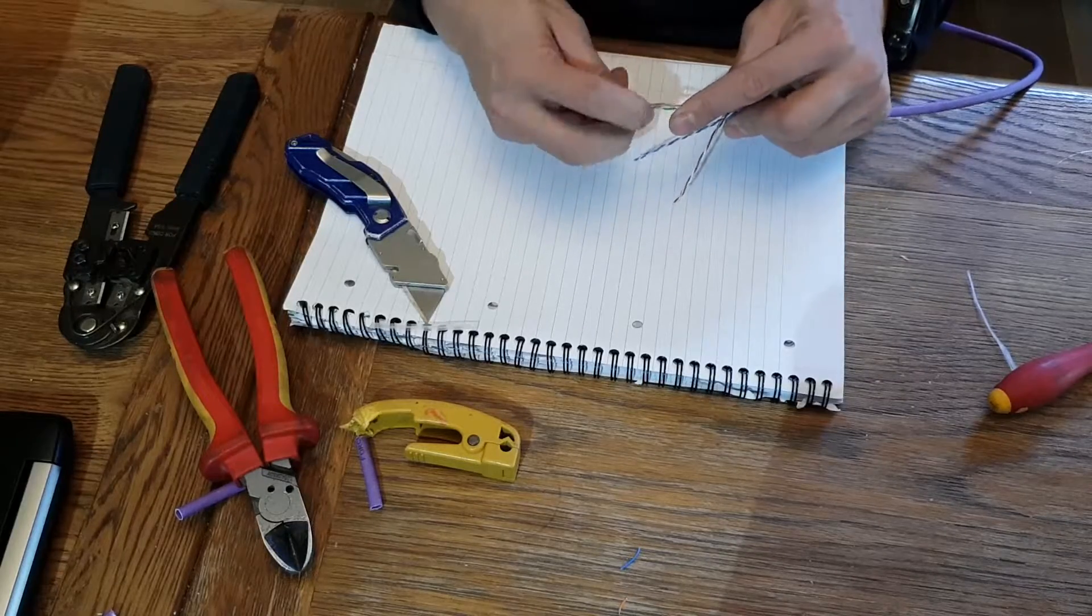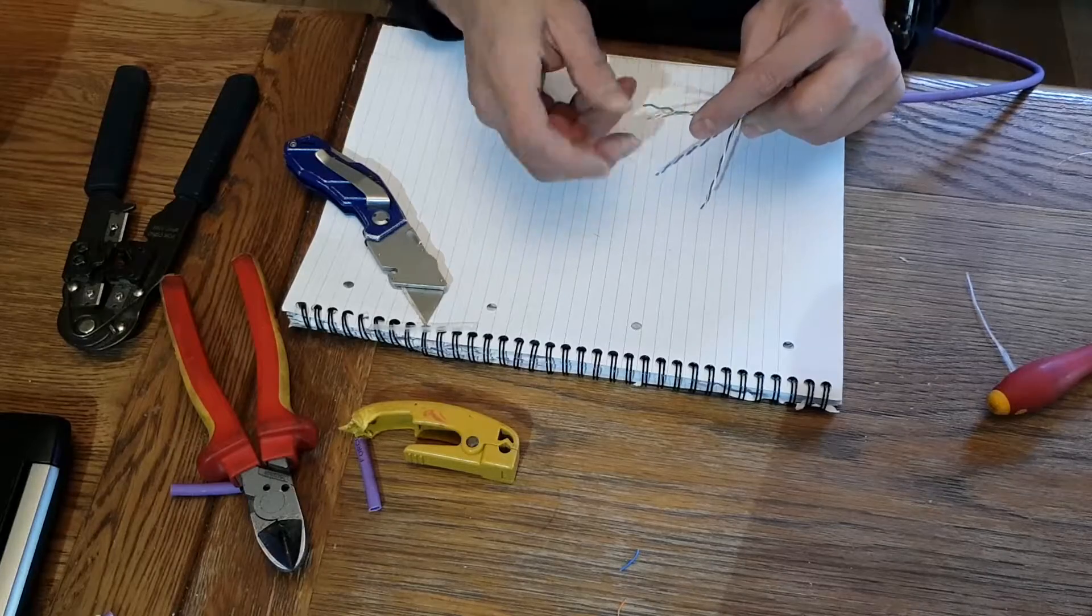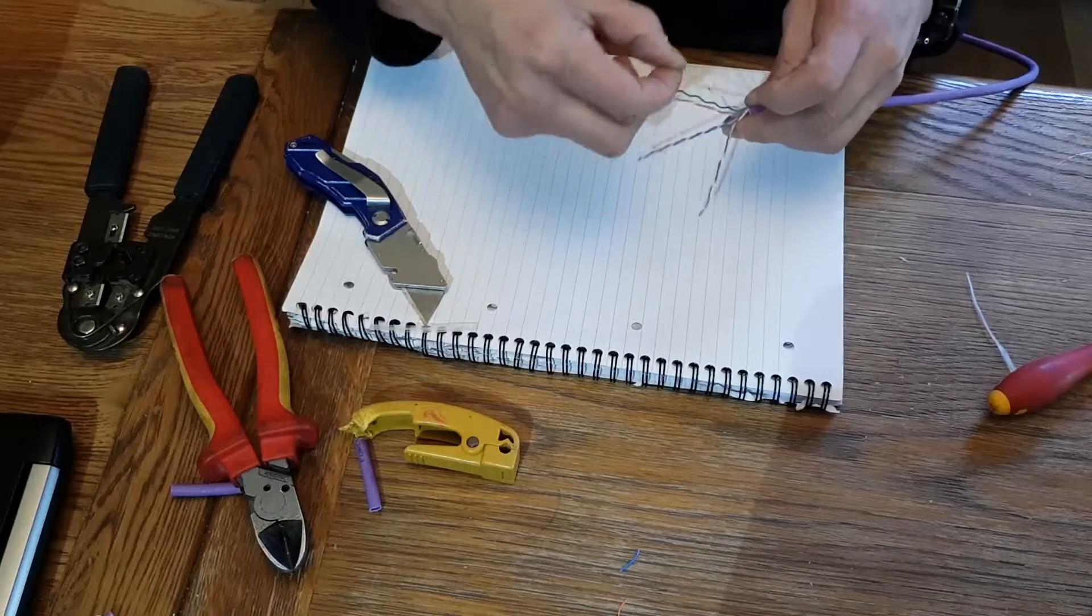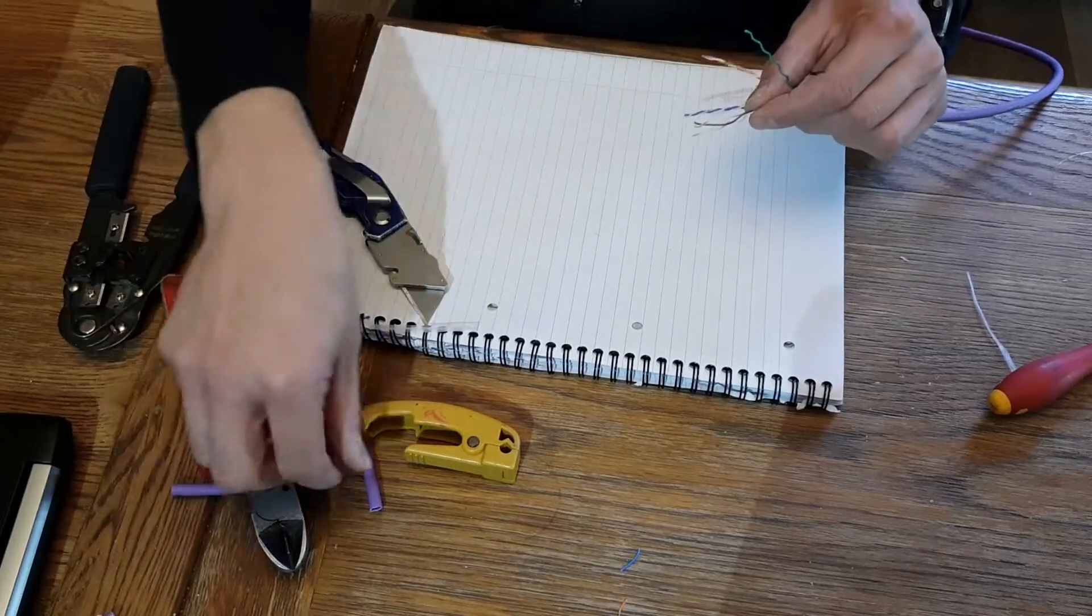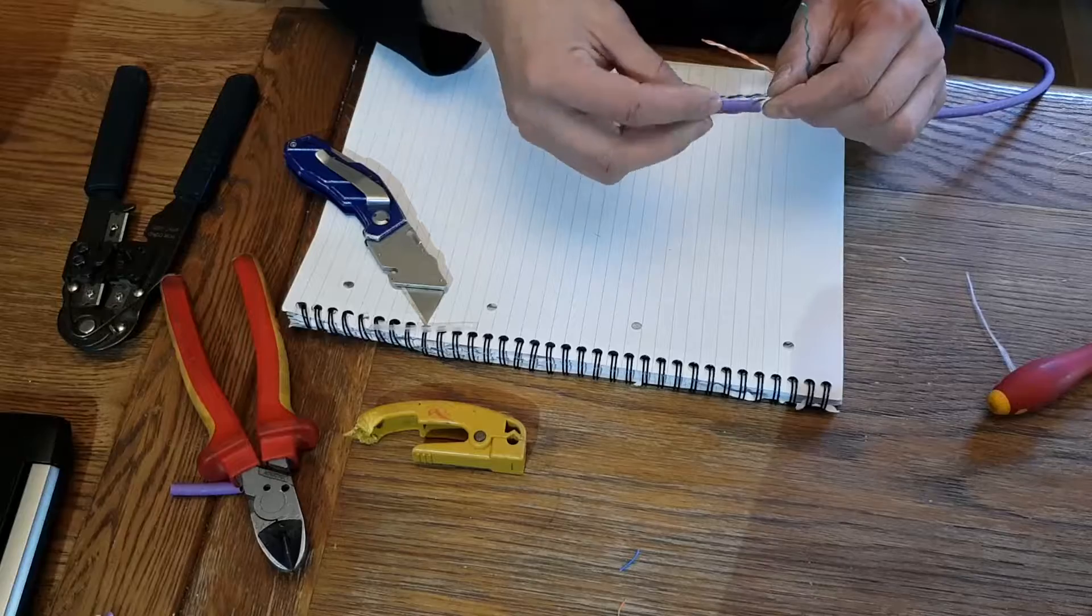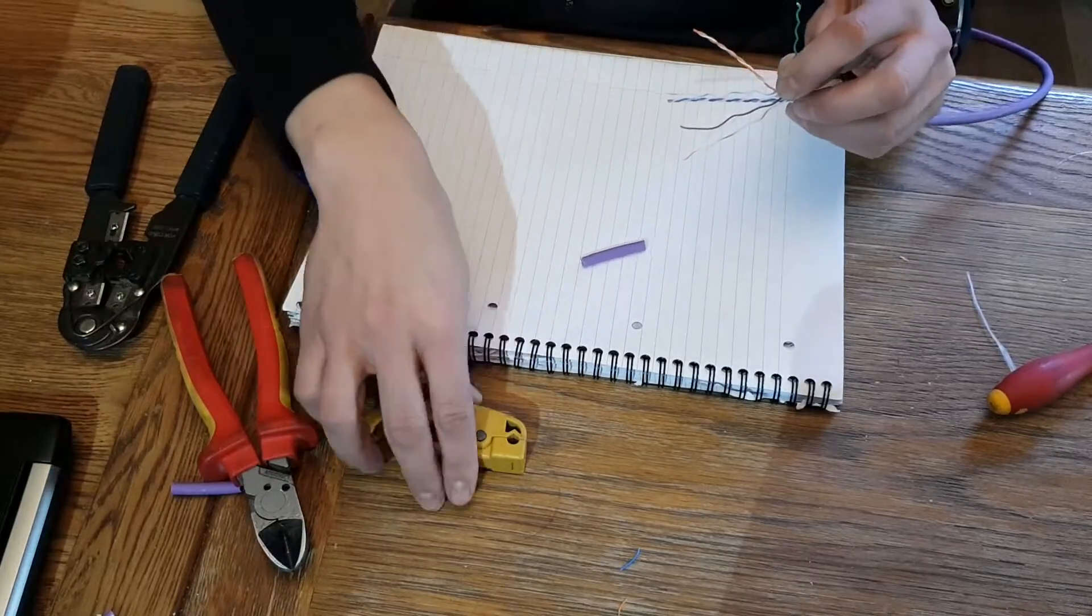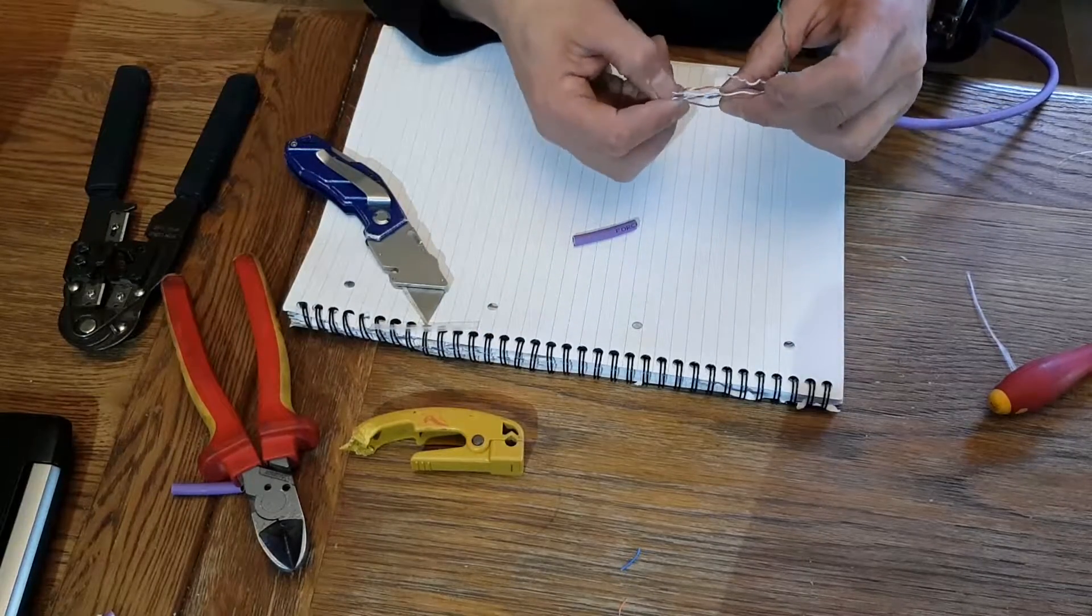Next thing to do is to untwist these pairs. You can either do it by hand like so, or I can just unpick one. You can use a bit of that casing that you've removed there, and the other way is to spin it over like that. Same for all of them.